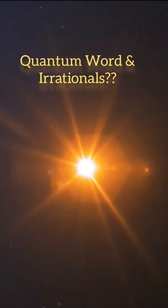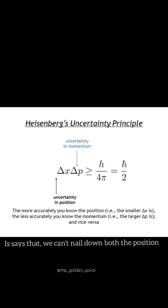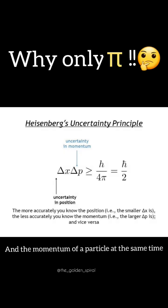In quantum physics, where things get fuzzy, there is this idea called Heisenberg's uncertainty principle. It says that we cannot nail down both the position and the momentum of a particle at the same time.